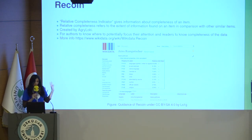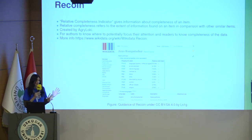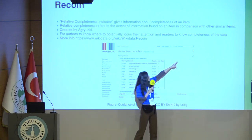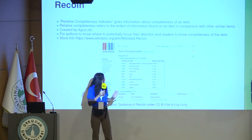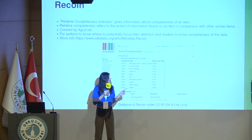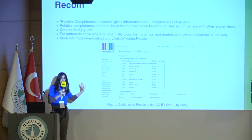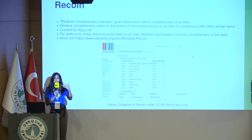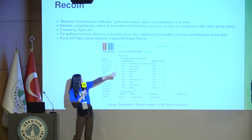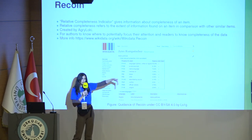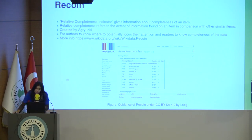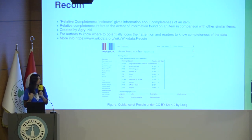This tool is also very, very helpful: Recoin, a relative completeness indicator. It gives us an idea about how complete our Wikidata item is by comparing it with similar other items. You see this yellow indicator — it can also be green, there are five degrees. For example, this is a politician item, and it compares it with other politician items and recognizes missing information. If you are an editor, you can aim to make it green from yellow. It is again by Agri Loki, and it's for authors who want to improve Wikidata. As a reader, it's also nice to know that an item is not complete yet.